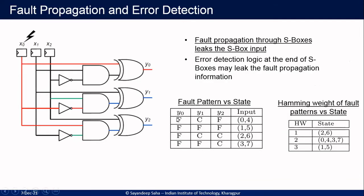We see the fault always propagates to y0, but the propagation to y1 and y2 is conditional on the input values. Given this fact, observing the fault propagation or fault differential at the output of the S-box exposes the input. We cannot directly observe such fault propagation in all practical cases when countermeasures are present. If we use a side channel, we can still do that tracking because side-channel signals, although they abstract information through the Hamming weight, lose some information, but there is still some entropy loss in the intermediate state — the input of the S-box — that can be exploited.